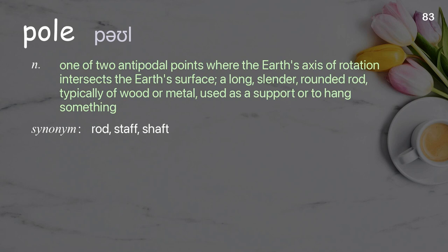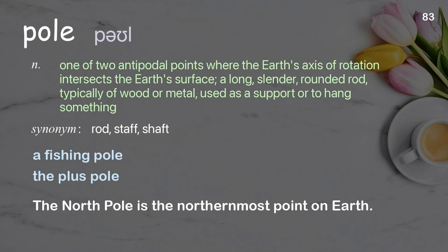Pole: one of two antipodal points where the earth's axis of rotation intersects the earth's surface; also a long, slender, rounded rod typically of wood or metal used as a support or to hang something. Examples: a fishing pole, the plus pole. The north pole is the northernmost point on earth.